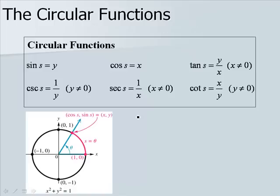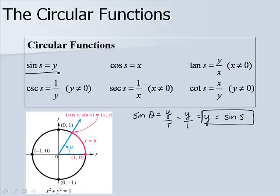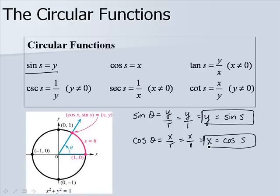When we defined sine previously, sine of theta was y over r. But in the unit circle r is 1, so we have y over 1, which is simply y. So y is now equal to the sine of s. Similarly, cosine of theta is x over r, which becomes x over 1. So x equals the cosine of s. The rest of the functions follow accordingly.